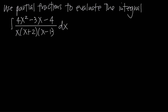This is the easiest kind of partial fractions problem — distinct linear factors — because linear factors are easier to handle than quadratic factors, and distinct factors are easier to handle than repeated factors. So when you have distinct linear factors, this is how you do the partial fractions decomposition.